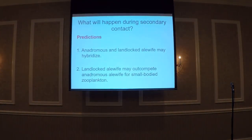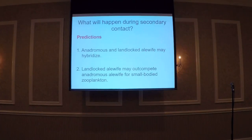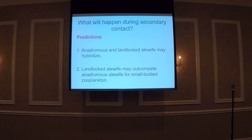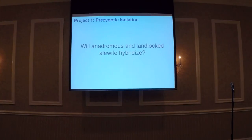Going into this, I had two predictions about what would happen when these two fish populations interact. One is that anadromous and landlocked alewife might hybridize — from the literature, landlocked fish spawn a little later, but they overlap a bit. Two, from an ecological perspective, I predicted that landlocked alewife might outcompete anadromous alewife for zooplankton, since landlocked alewives have smaller gill rakers and foraging morphology, so they may have a home field advantage in their lake.